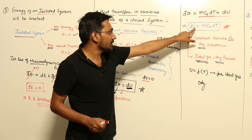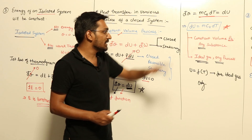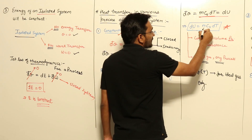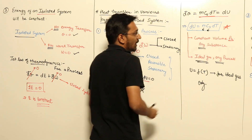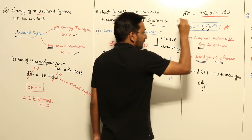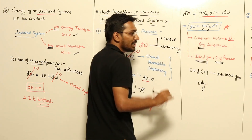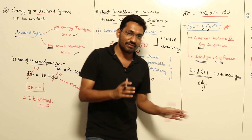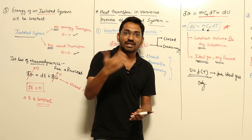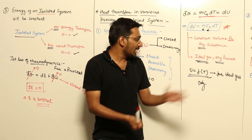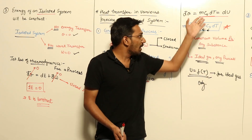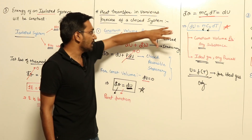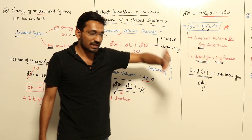For an ideal gas, mass is constant and specific heat is constant. So for an ideal gas, internal energy is a function of temperature only. If temperature changes, its internal energy will change. This is the constant volume process heat transfer, which is equal to DU, which is equal to mCvDT.